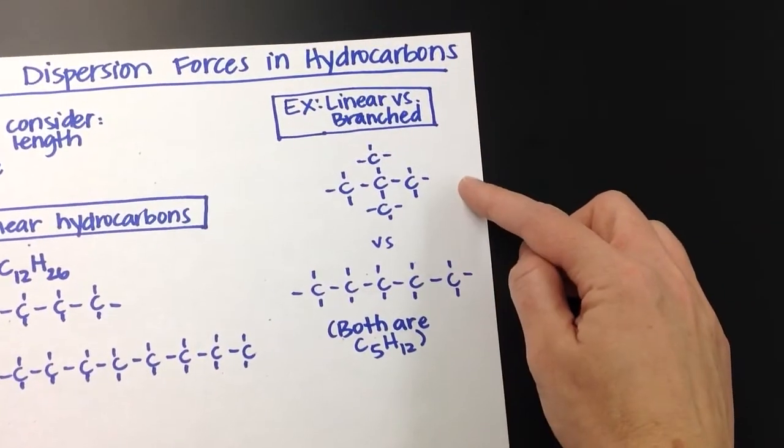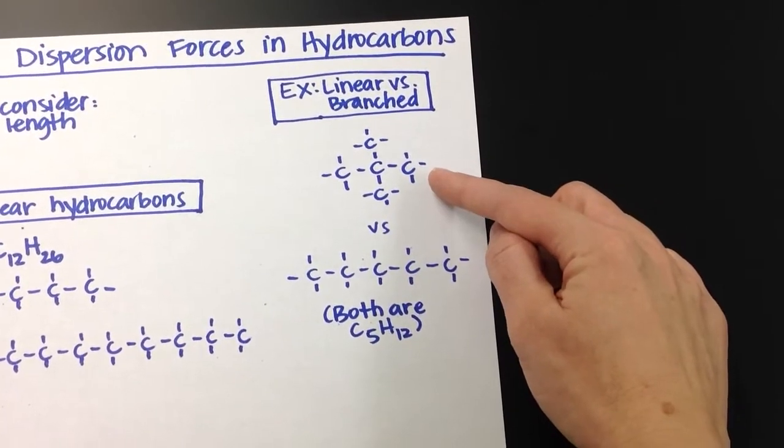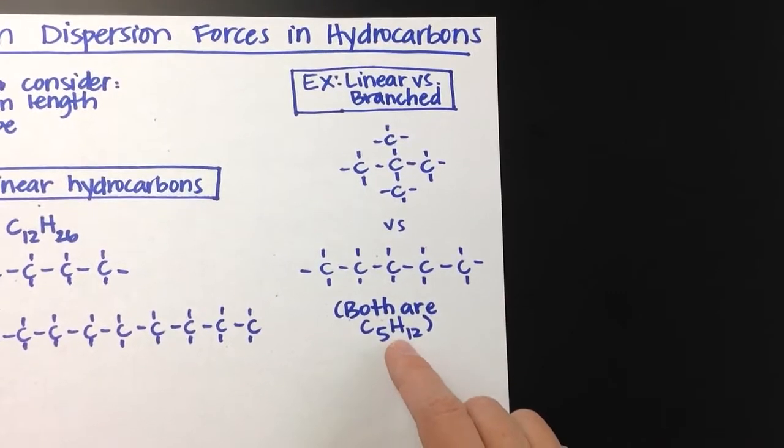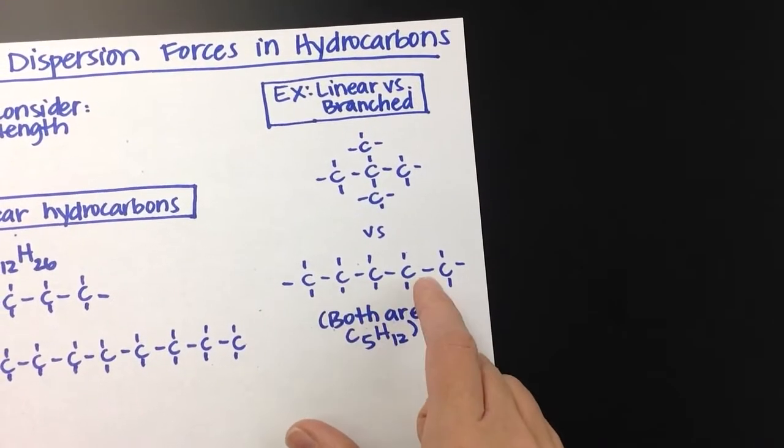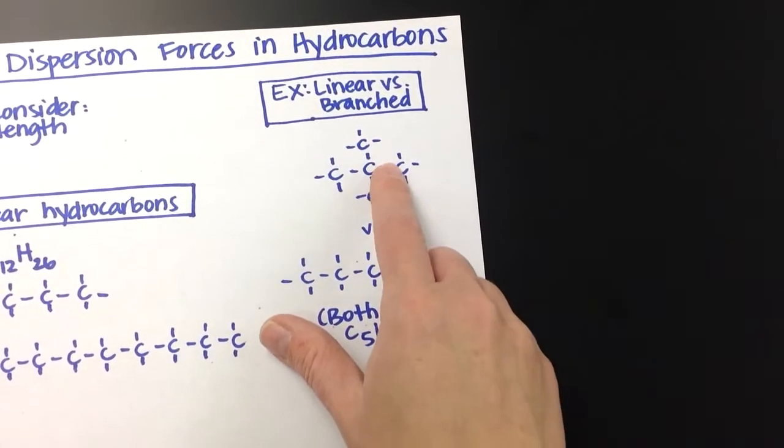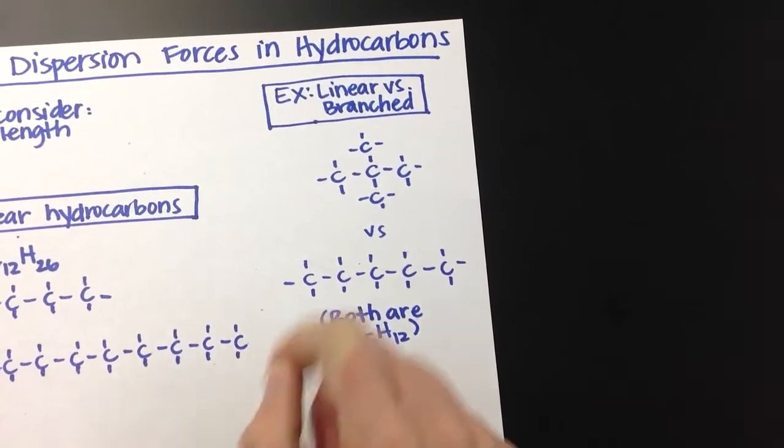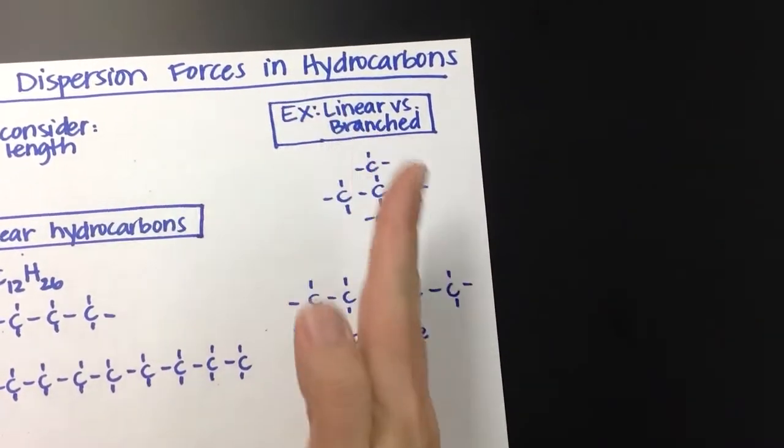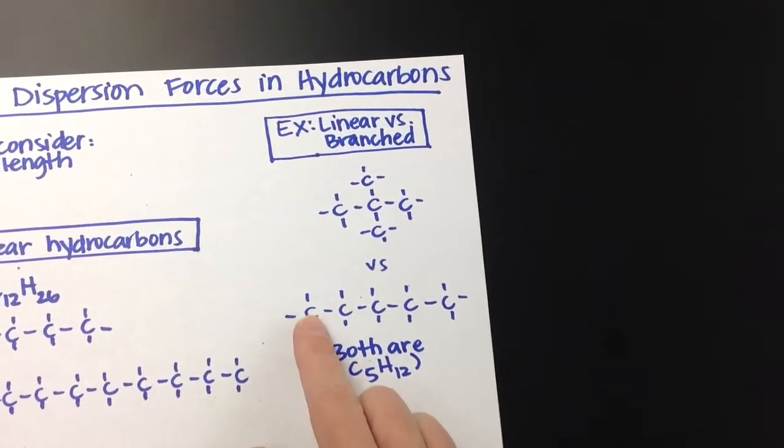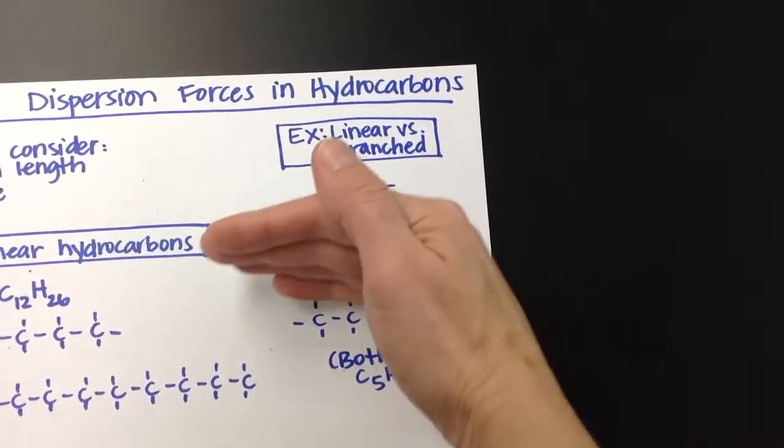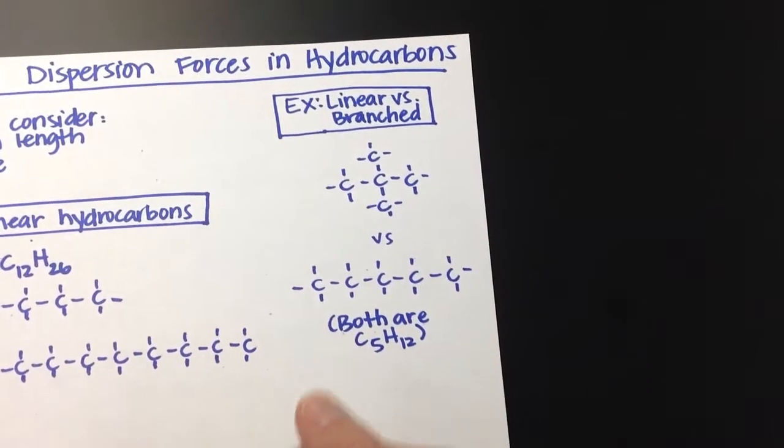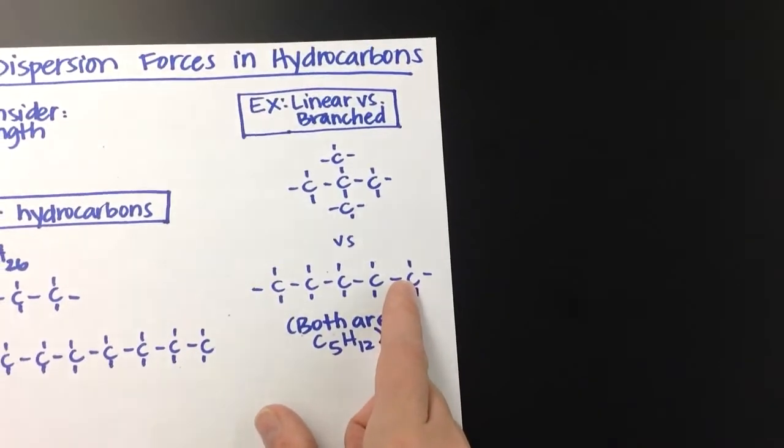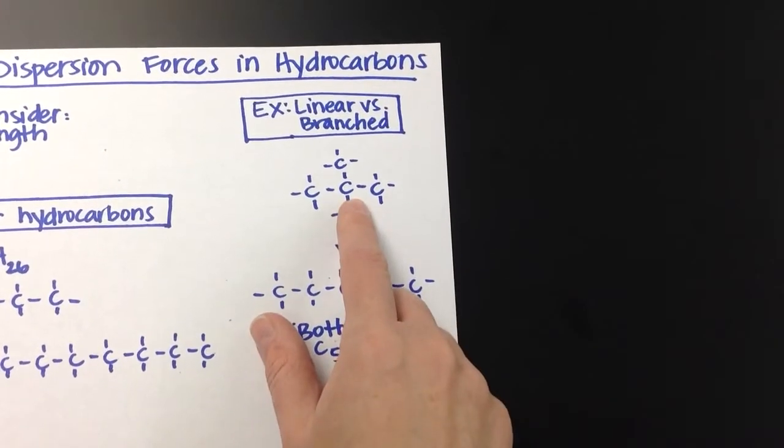Now let's look at a linear shape versus a branched shape. So both of these are isomers of C5H12, one of them is linear, and one of them has a T shape. Now when you look at these, these are not going to stack on top of each other nice and neat, they're going to be kind of awkward, boxy on top of each other, whereas the linear straight chain is going to be nice stacking. So you would expect the linear chain to have a higher boiling point than the branched chain.